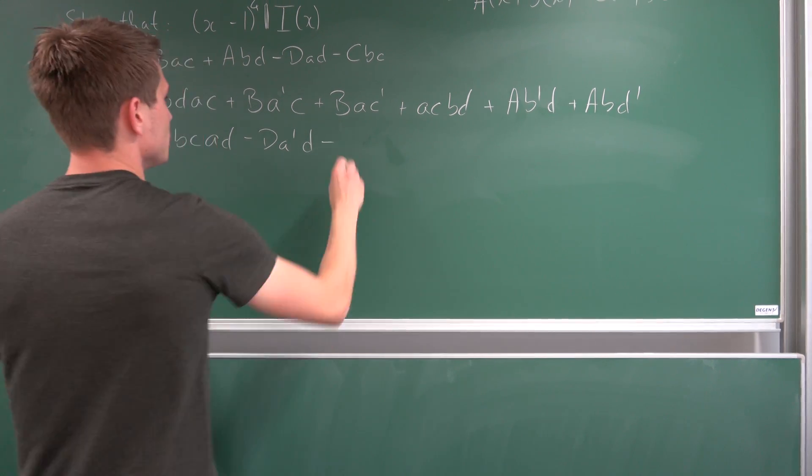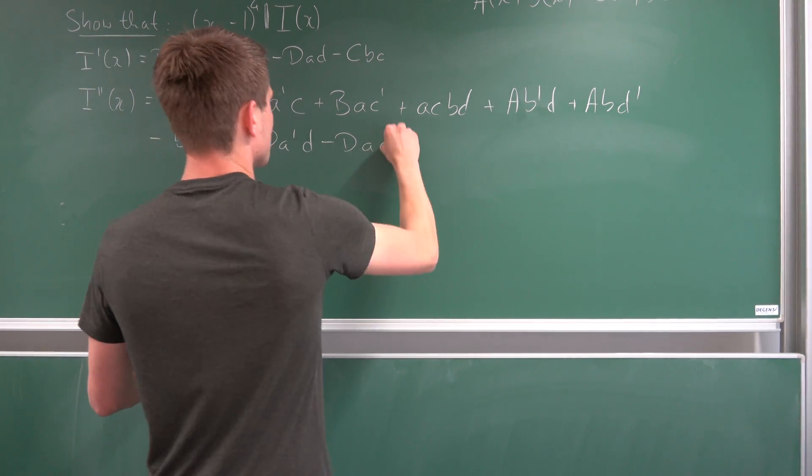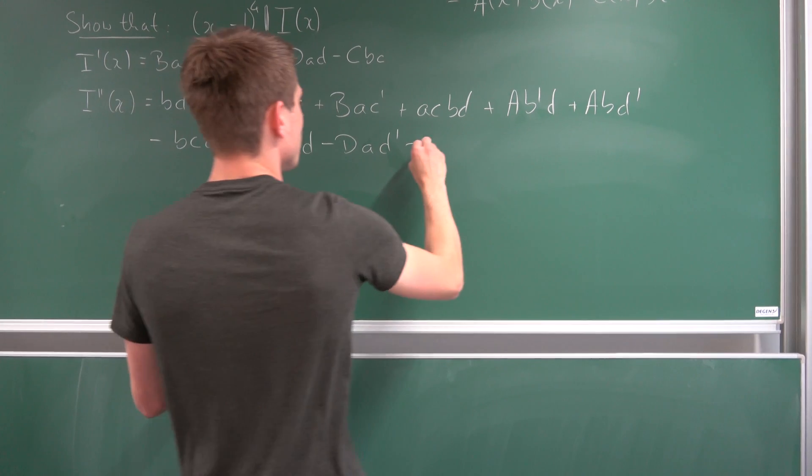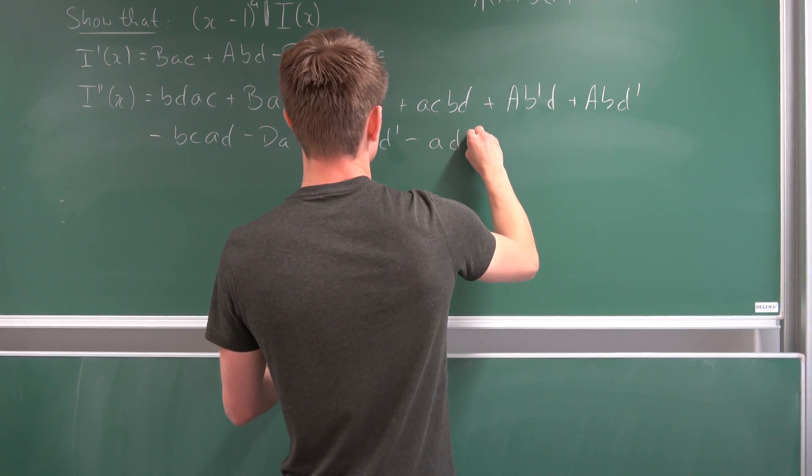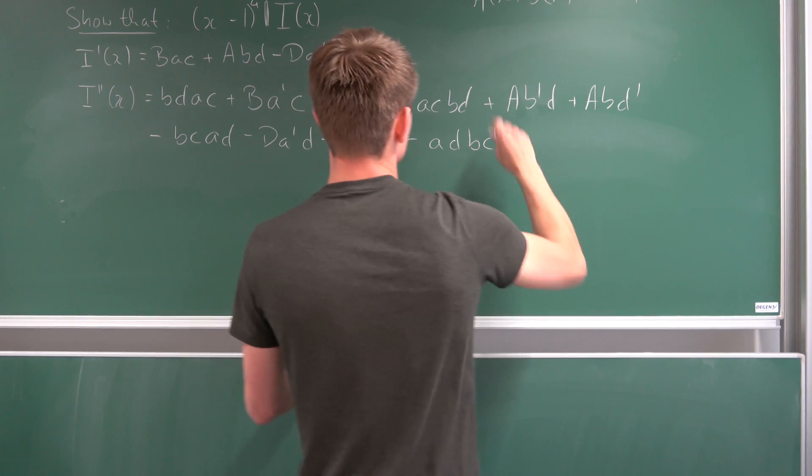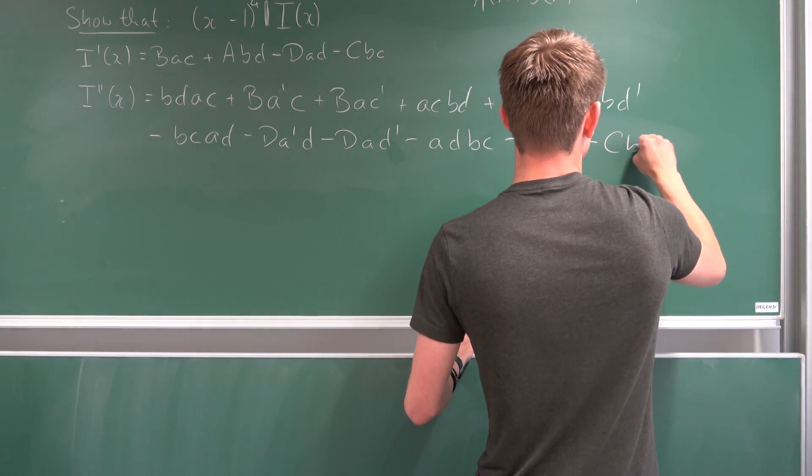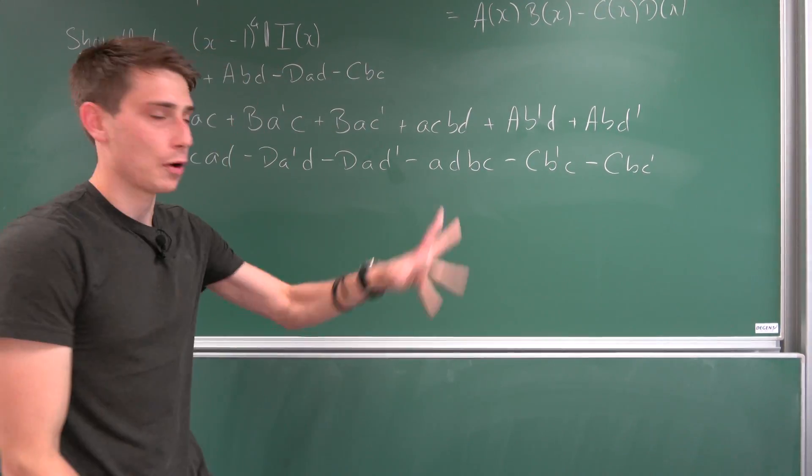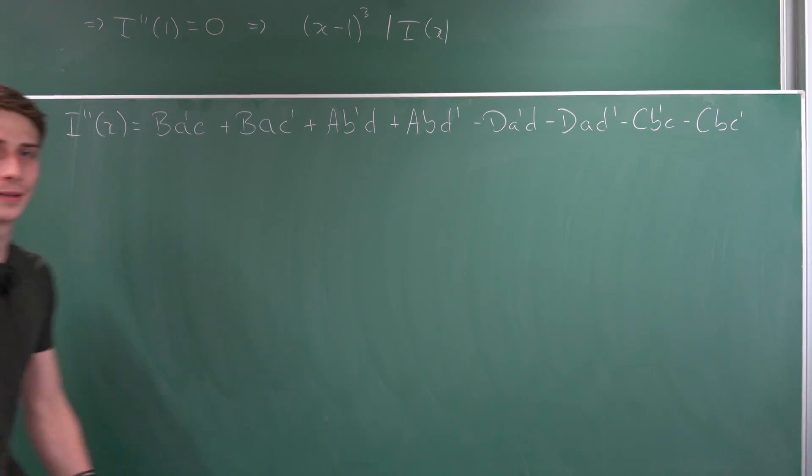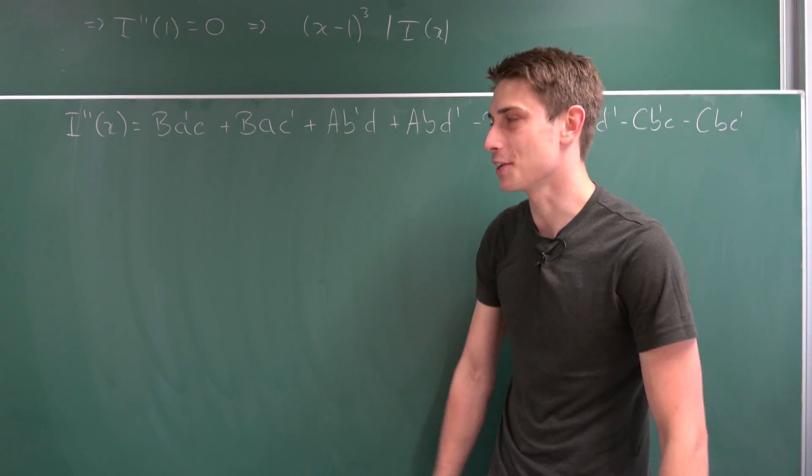Negative D A D prime, and then negative A times D times B times C, negative C B prime small C, negative C B C prime. Okay, so we have done this now.